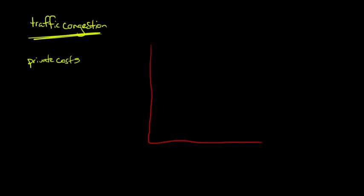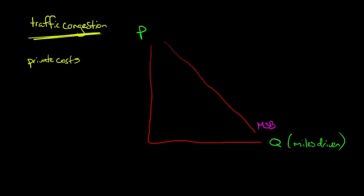Let me graph how this can lead to a negative externality and how a Pigouvian tax can play a role. Instead of thinking of traffic congestion directly, let's map this out as miles driven — we're going to set a Pigouvian tax on miles driven as the quantity, because the more miles people drive, the more traffic congestion you're going to have. We've got our marginal social benefit, or demand curve for miles driven. There's social benefit from people driving — transporting food, commercial purposes, going to a hospital — but the more people drive, there's less and less social benefit.